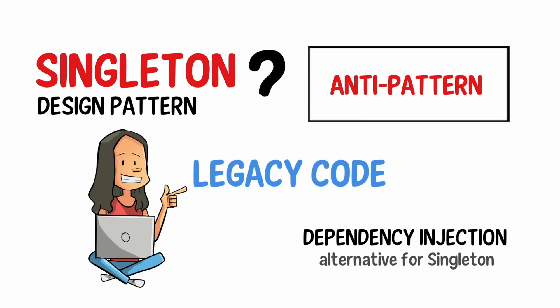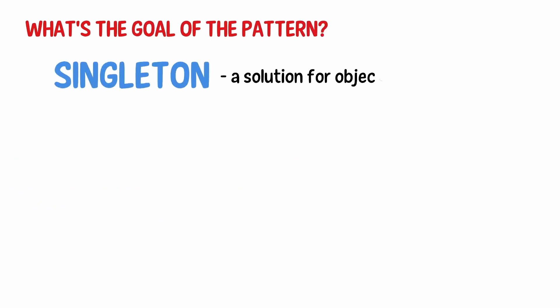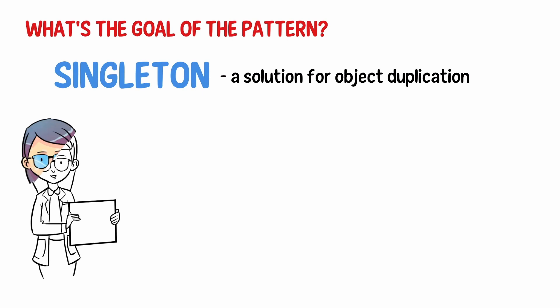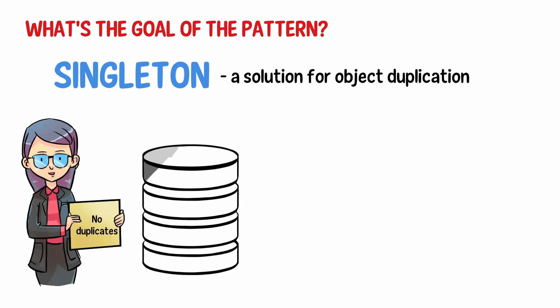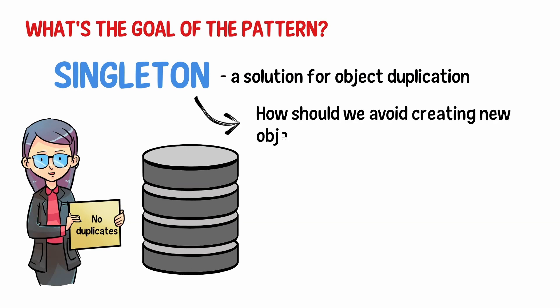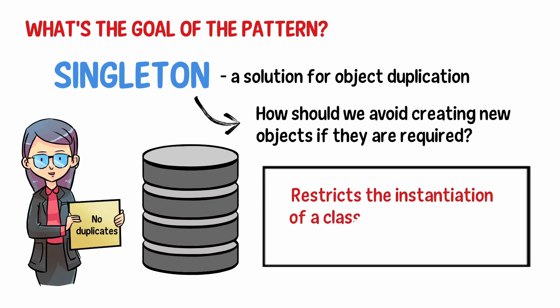What is singleton all about? What's the goal of the pattern? The singleton pattern is a solution for object duplication. For example, if we only need one database connection for the entire application, how should we avoid creating new objects if they are required? When a class cannot be created and only the same class has access to one instance of an object, we can create an object within this class when it cannot be created and simply use it when it has already been created.